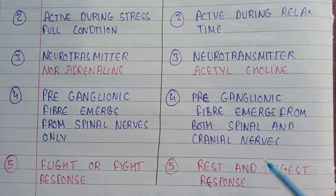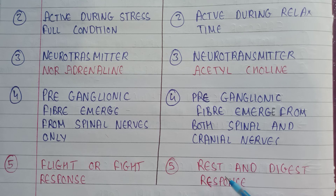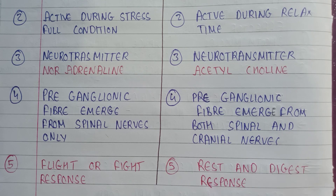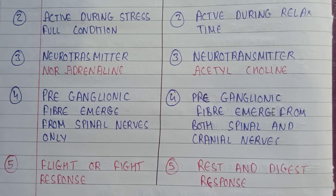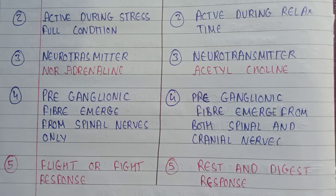The last point is that the sympathetic nervous system is also known for the fight-or-flight response, whereas the parasympathetic nervous system is known for the rest-and-digest response. That covers all the key points of difference between the sympathetic and parasympathetic nervous systems. You can take a screenshot if you want to remember all of these points.